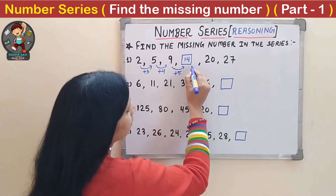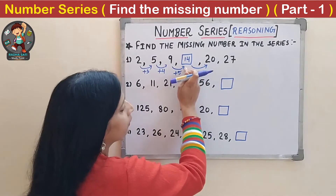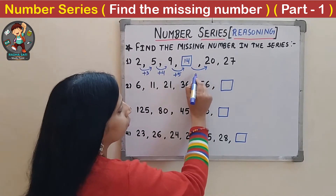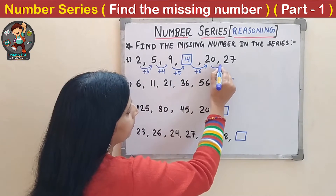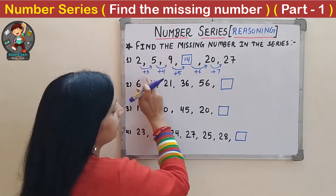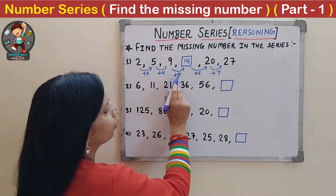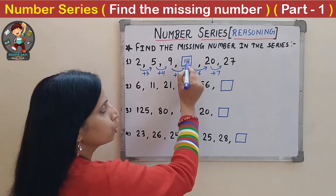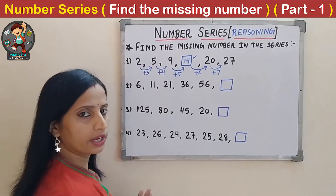To verify: from 14, adding 6 gives 20, and adding 7 gives 27. The pattern in the differences is 3, 4, 5, 6, 7 — each increasing by 1. So 14 is our correct answer.